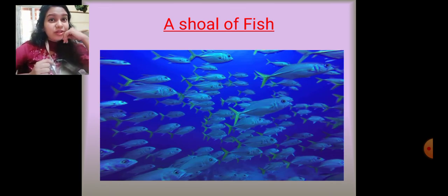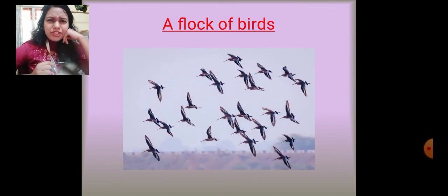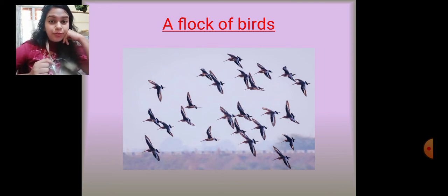So far the groups we saw were all called herds. But a group of fish is called a shoal of fish. Some shoals have hundreds and thousands of fish, and they all live in the oceans hunting for food together. Then we have a flock of birds — birds that move from one place to another in search of food, migrating from colder climates to hotter climates when temperatures drop.